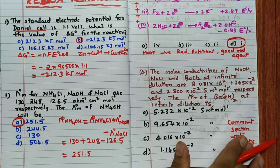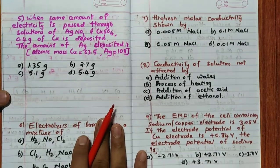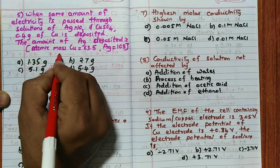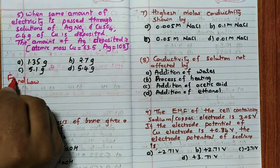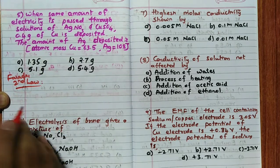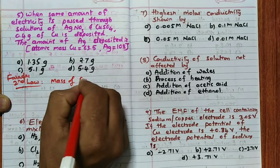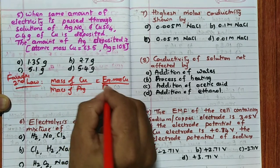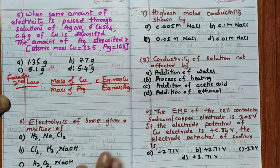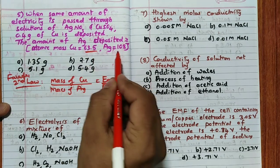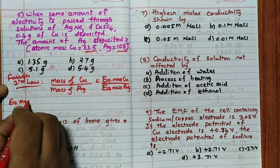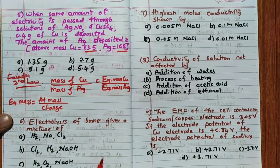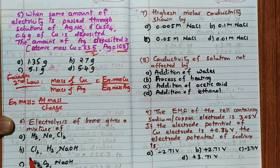The fifth question: when the same amount of electricity is passed through AgNO3 and CuSO4 solutions, 0.4 g of Cu is deposited. How much Ag is deposited? This is based on Faraday's second law of electrolysis: mass of Cu / mass of Ag = equivalent mass of Cu / equivalent mass of Ag. Equivalent mass = atomic mass / charge.